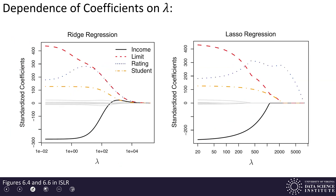Let's look at some plots. On the vertical axis we have standardized coefficients. The left-hand plot is ridge regression; the right-hand plot is LASSO regression. We're looking at those standardized coefficients as a function of lambda on the horizontal axis. Remember, lambda measures how strong a penalty we place on coefficient size, so the larger lambda is, the smaller our total coefficients will be.